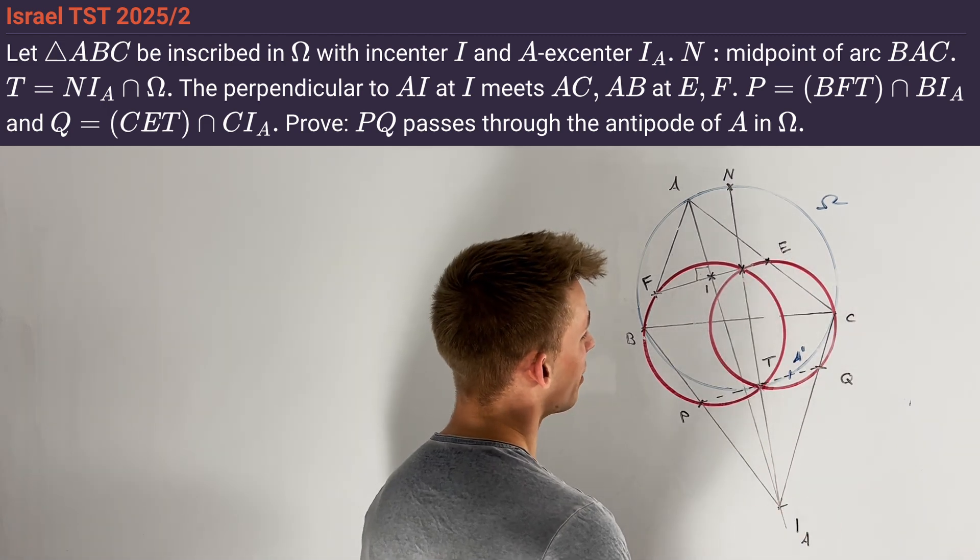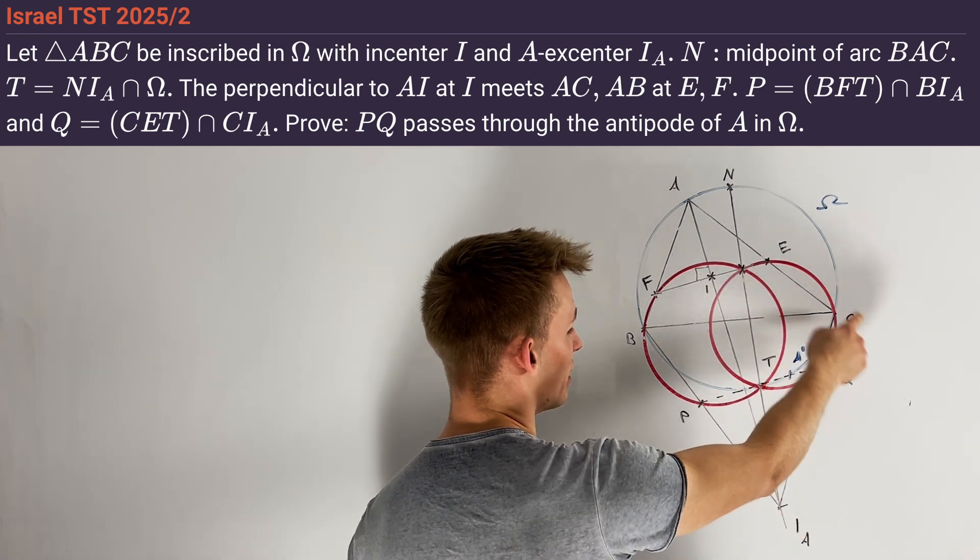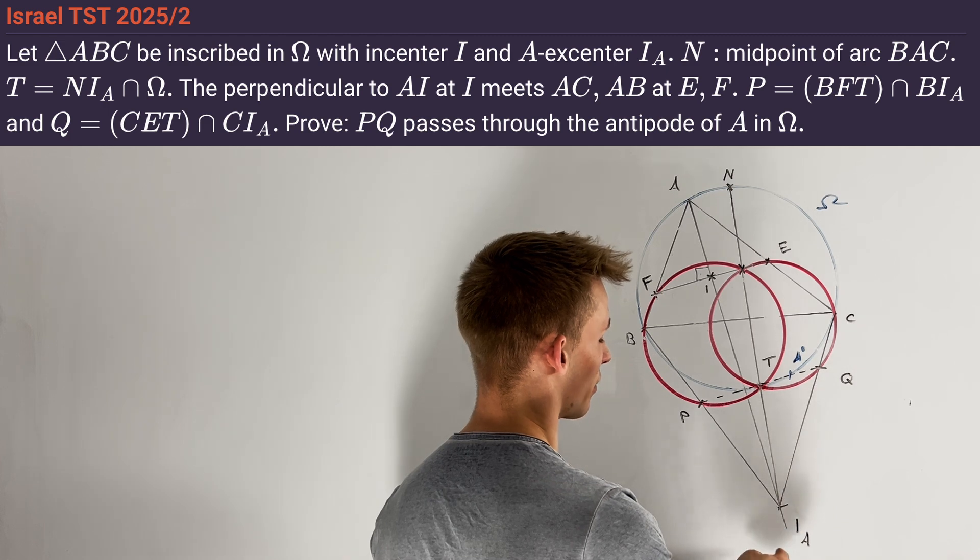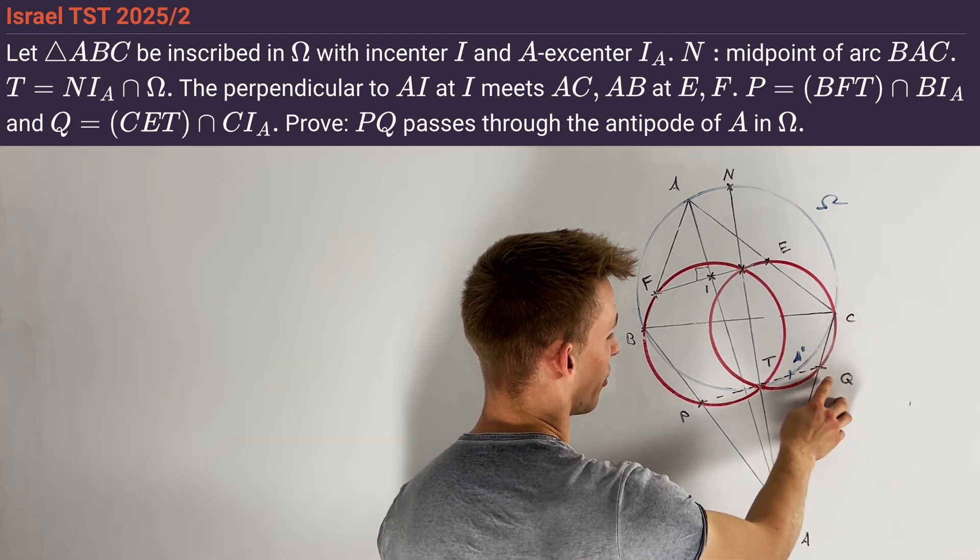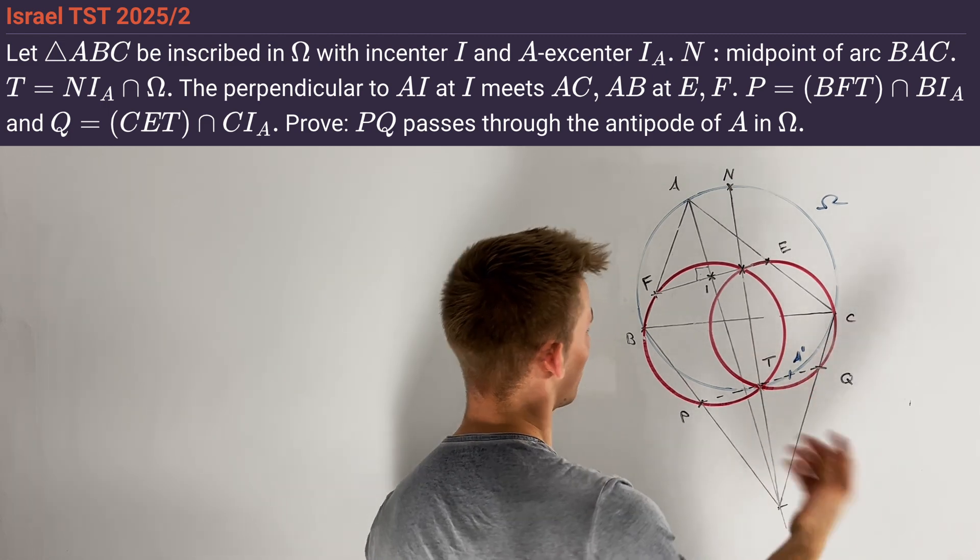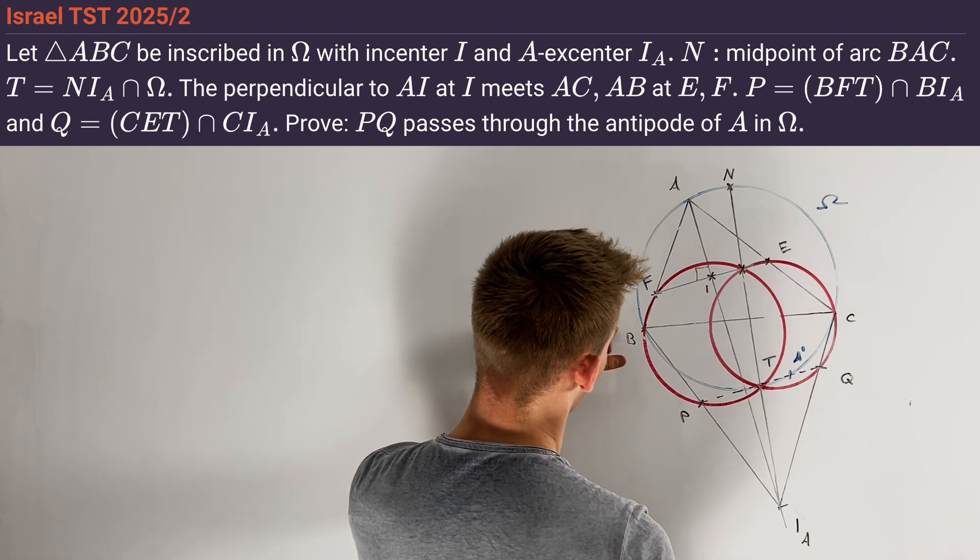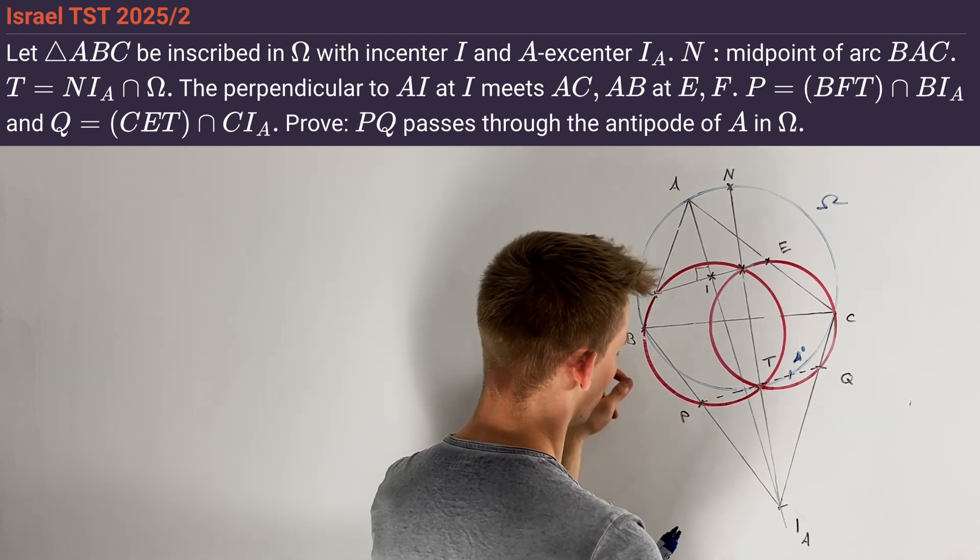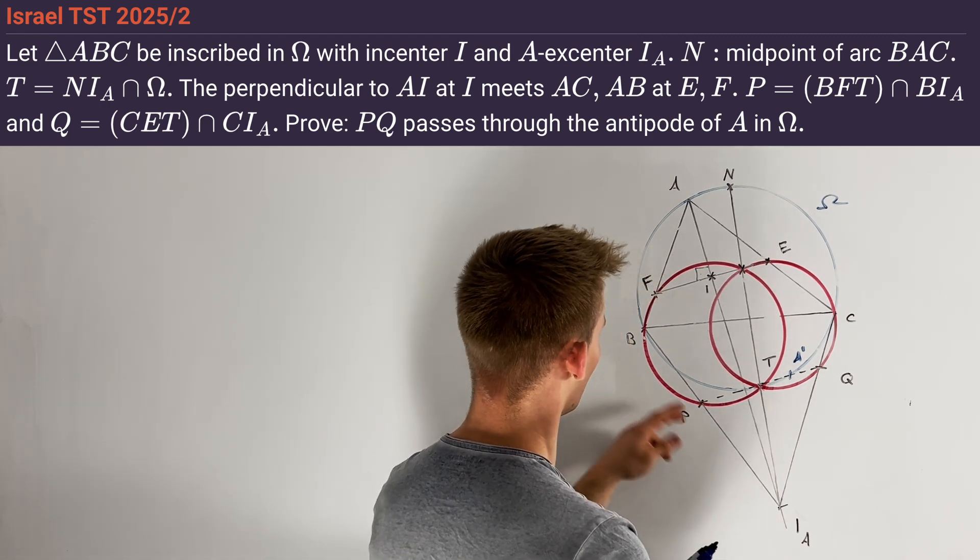In the next step, we draw in the circumcircle of ECT and intersect it with I_AC at a point Q not equal to C. In the same way, the circumcircle of BFT intersects BI_A at a point P not equal to B.